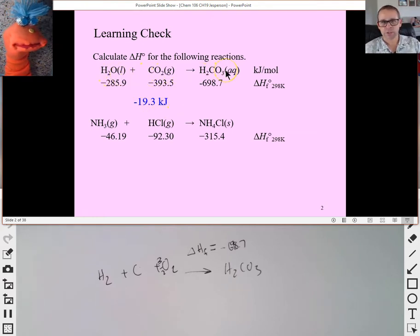This is not a delta H of formation reaction, so we don't want to call it a delta H of formation. This is not a delta H of formation, right. So this last one, how would we do it? -315.4, that's products minus the sum of -46.19 and -92.3. That's right, very good.